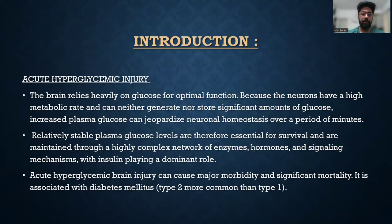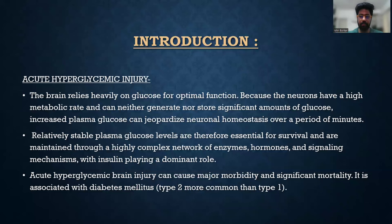The brain relies heavily on glucose for optimal functioning because the neurons have a high metabolic rate and can neither generate nor store significant amounts of glucose. Increased plasma glucose can jeopardize normal neuronal homeostasis over a period of minutes. Relatively stable plasma glucose levels are therefore essential for survival and are maintained through a highly complex network of enzymes, hormones, and signaling mechanisms, with insulin playing a dominant role.